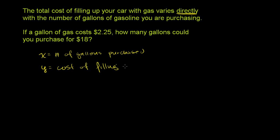This first statement tells us that y varies directly with the number of gallons, with x. So that means that y is equal to some constant, we'll just call that k, times x. This is what it means to vary directly. If x goes up, y will go up. We don't know what the rate is. k tells us the rate.